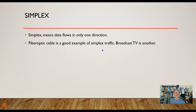The first is simplex traffic. Simplex traffic means it can only go one direction. Coax cable is a good example of this — I can only send information one direction down coax cable. Fiber optic is another good example; a single strand of fiber optic, I can only send one direction.